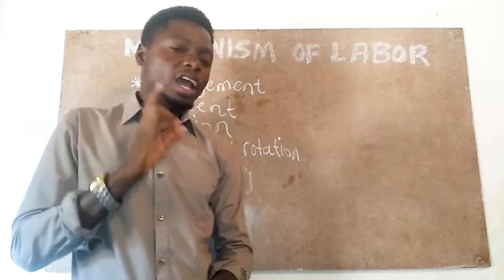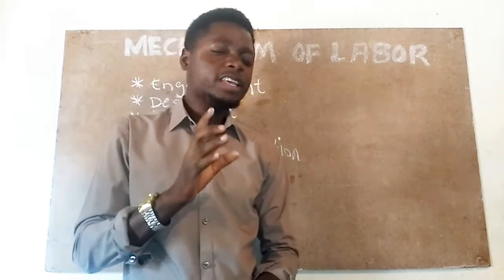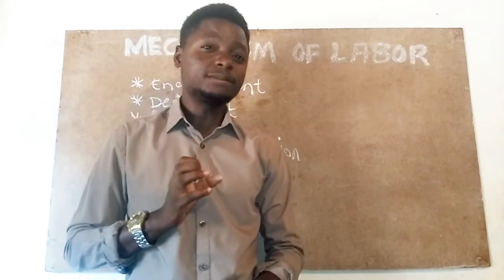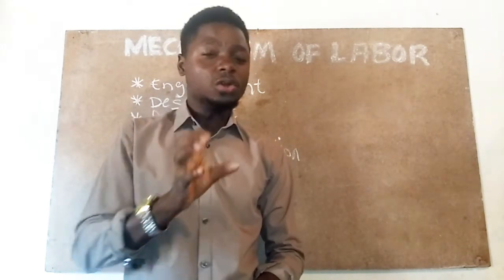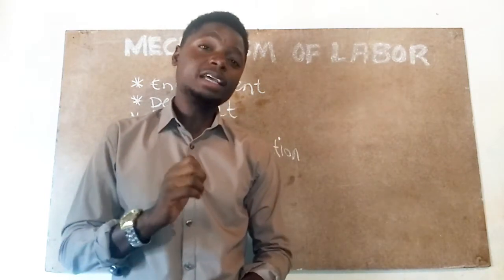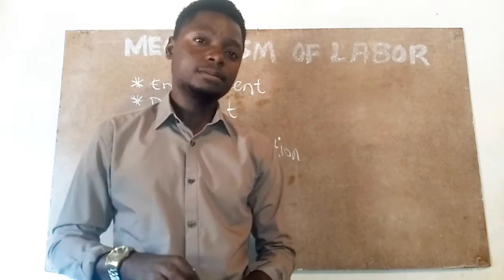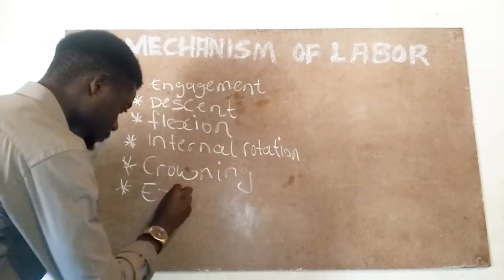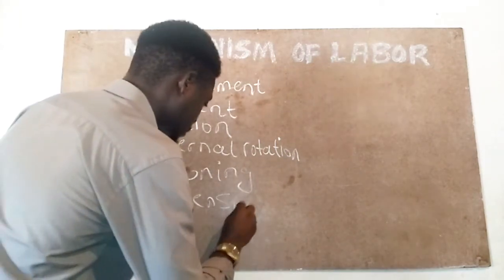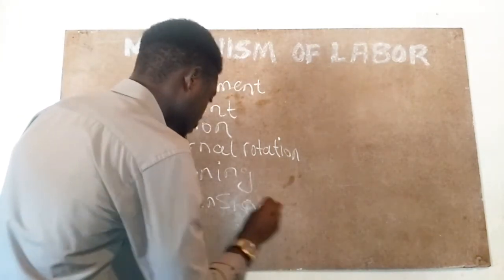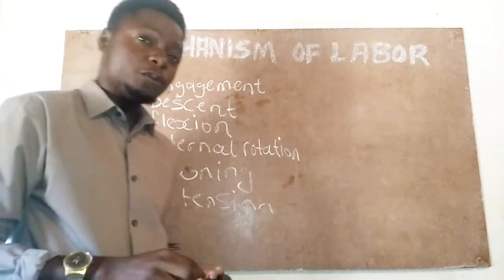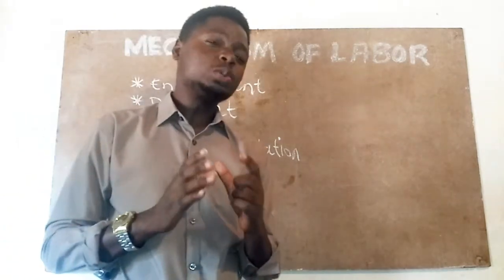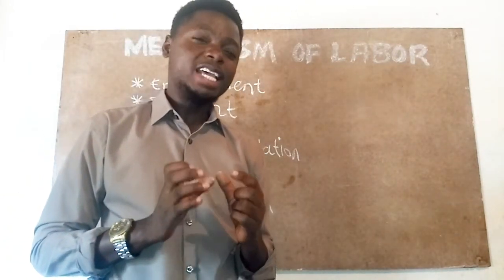Crowning is visible at the vulva. We say crowning has taken place when the head no longer recedes between contractions — whenever there is a contraction, the head no longer goes back. The next movement is extension. As crowning has taken place, the fetal head extends and sweeps through the perineum, causing it to stretch. This is what we call extension.